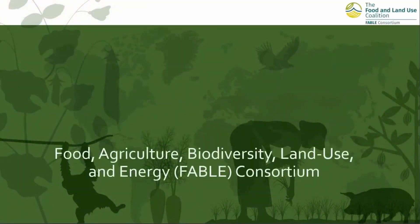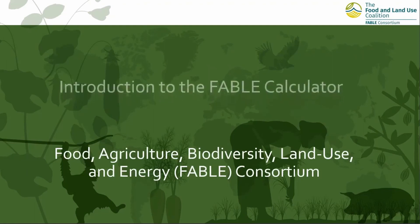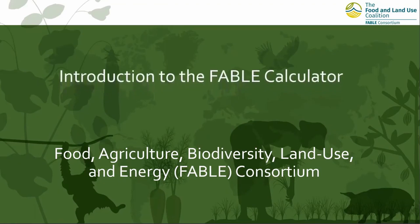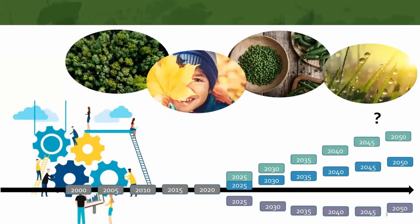Welcome to this introduction video on the Fable Calculator. Our objective for this video is to help you learn why we have created the Fable Calculator, how it is constructed, and to begin to understand its overall structure. The Fable Calculator is an accounting tool that focuses on the agricultural sector. It shows the evolution of multiple objectives related to the food and land use systems over 2000 to 2050, and how alternative assumptions on key parameters can increase or decrease the likelihood to meet sustainability objectives.